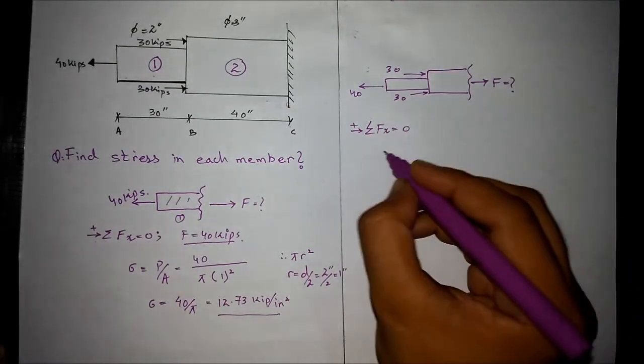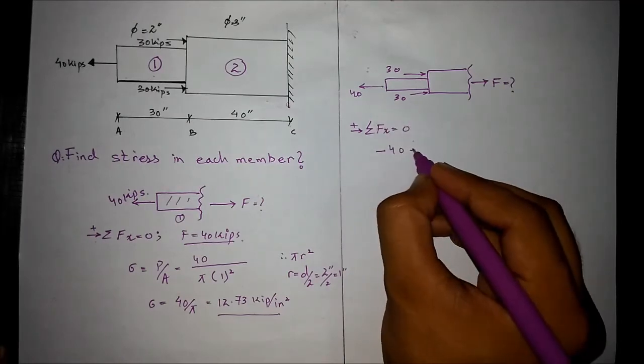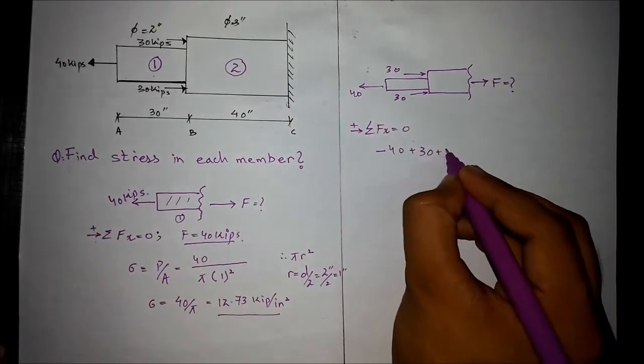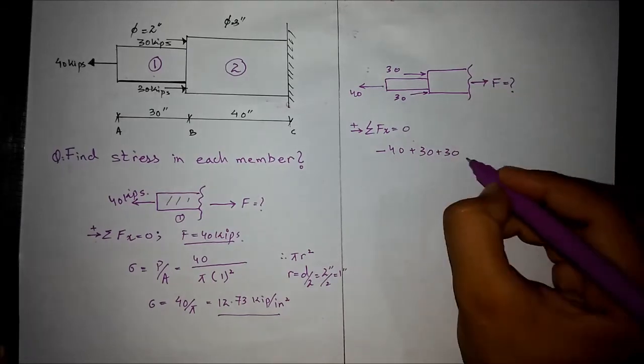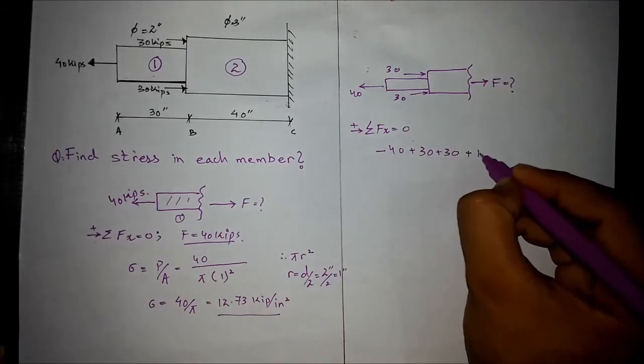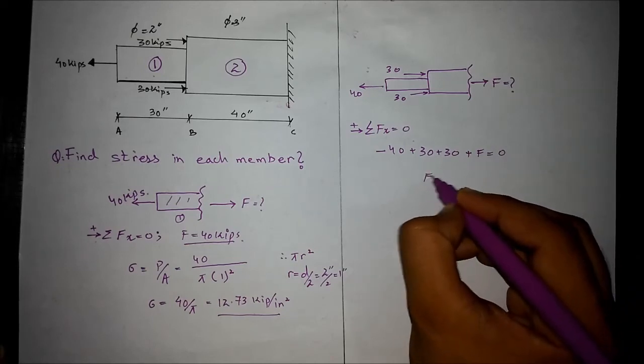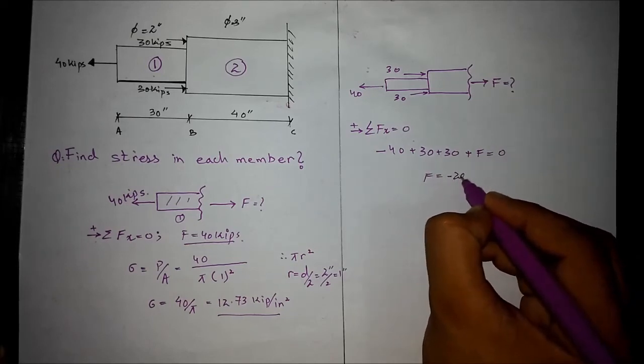We have minus 40 kips and the two 30 kips forces, and again a plus force F. F comes out to be minus 20 kips.